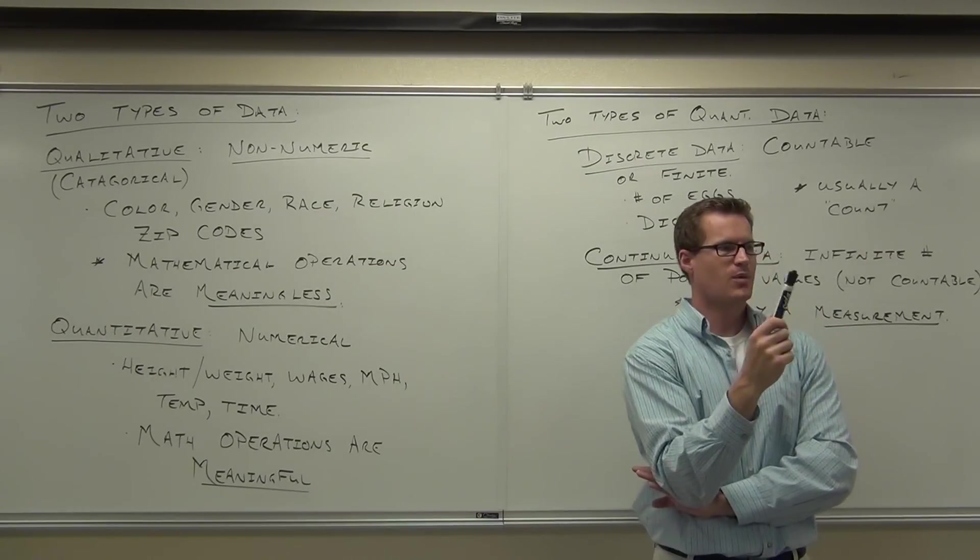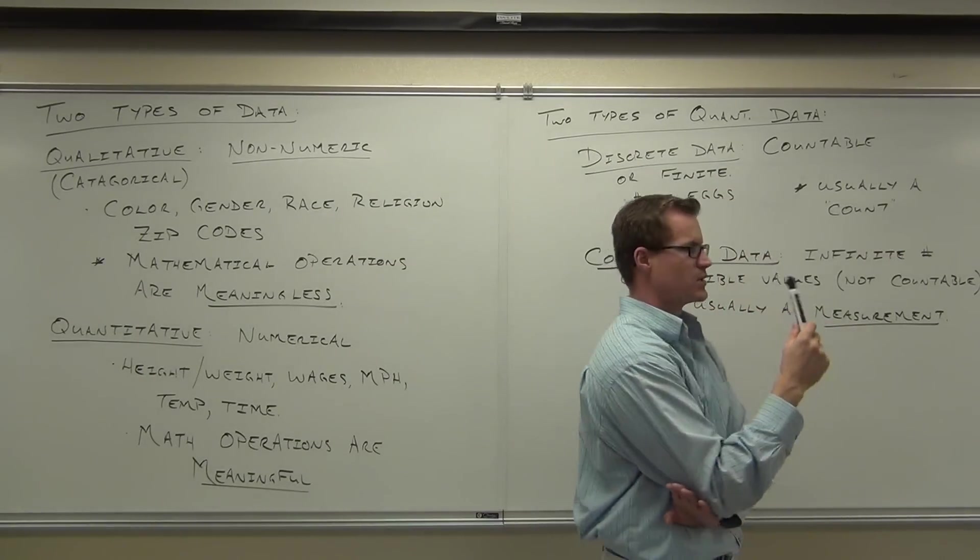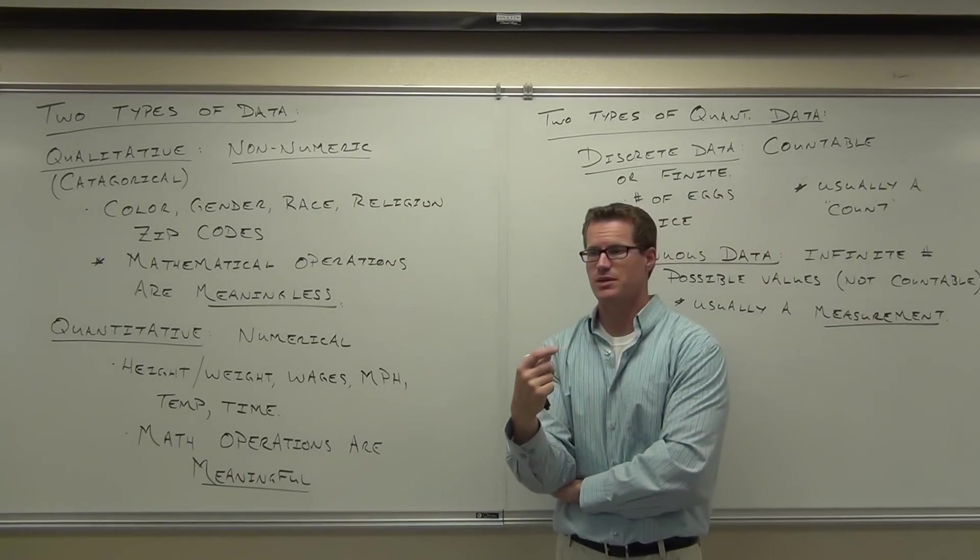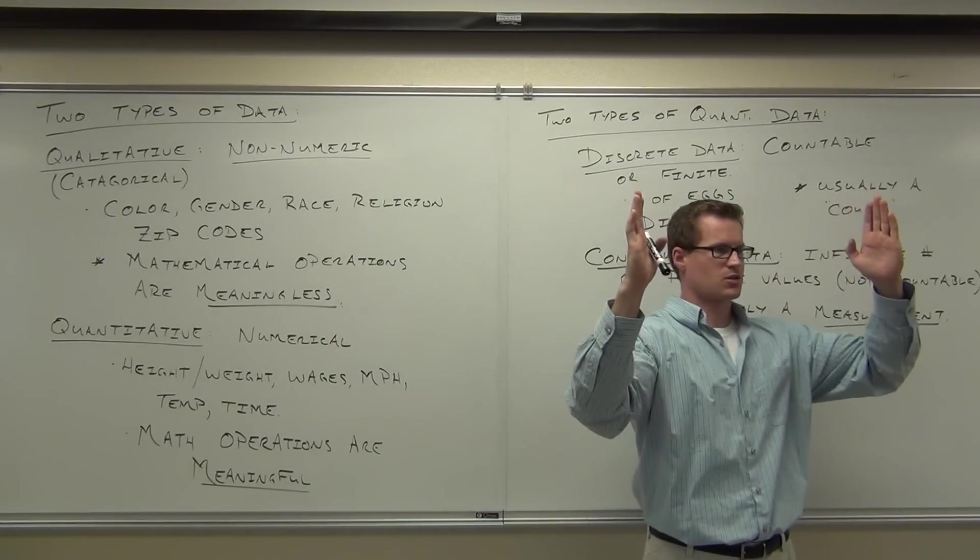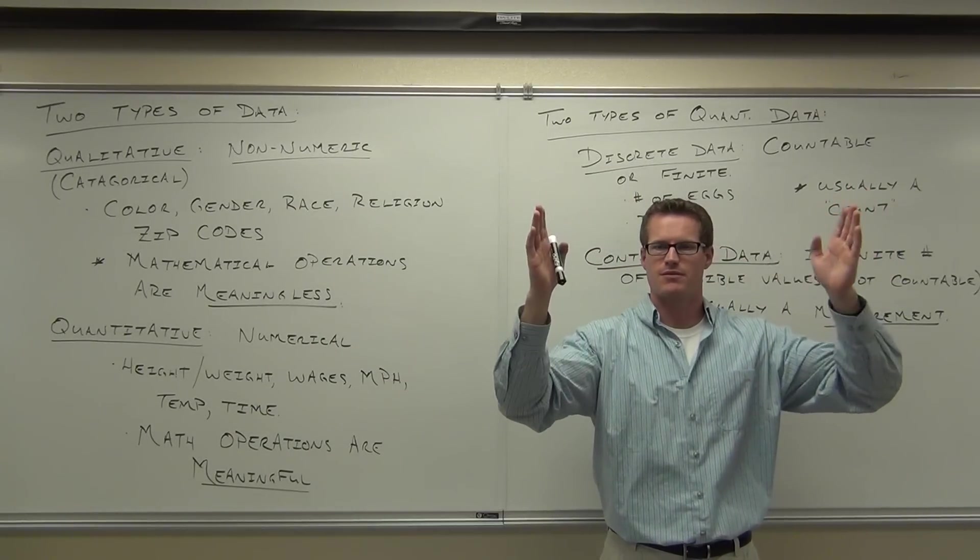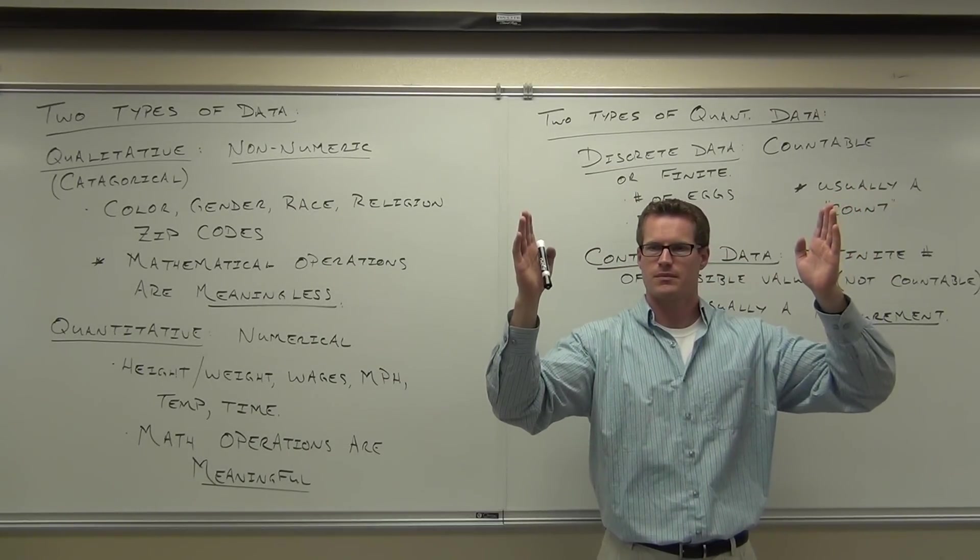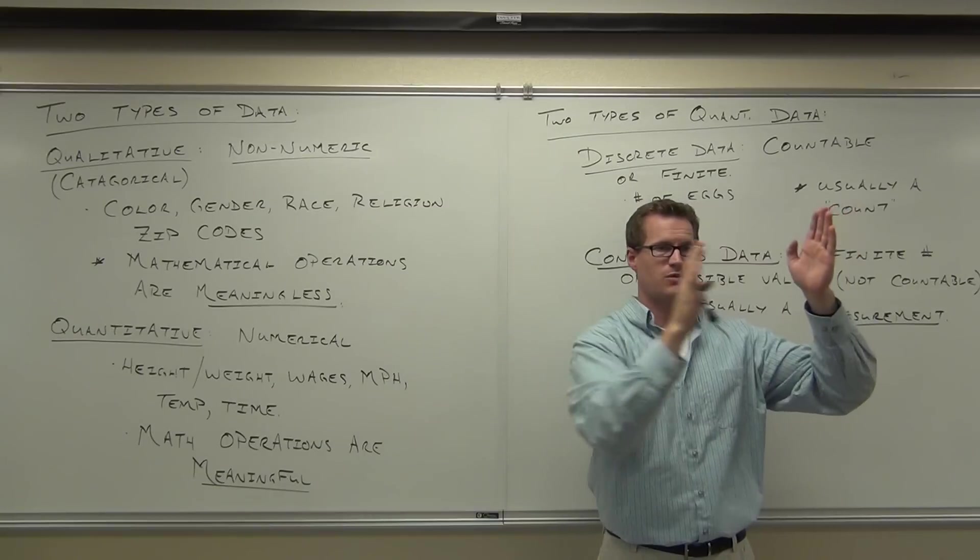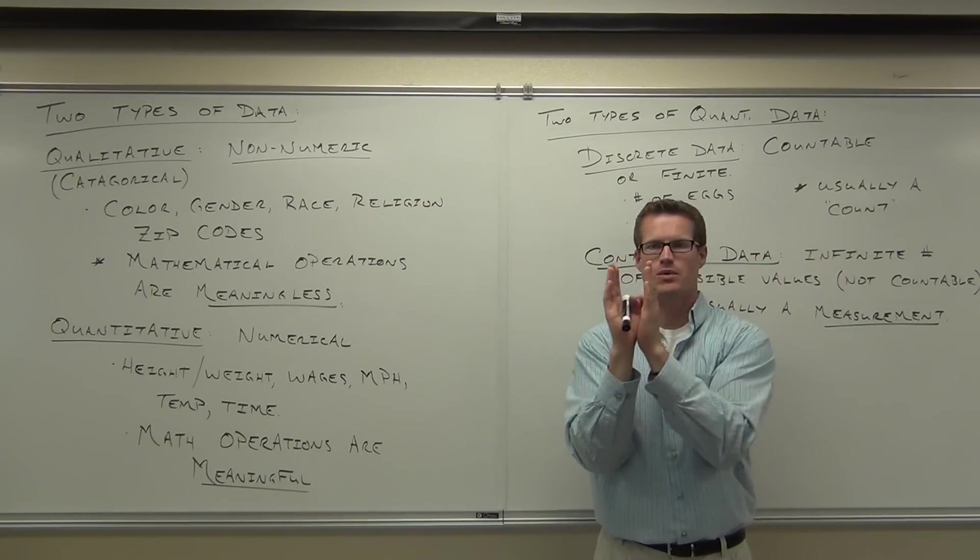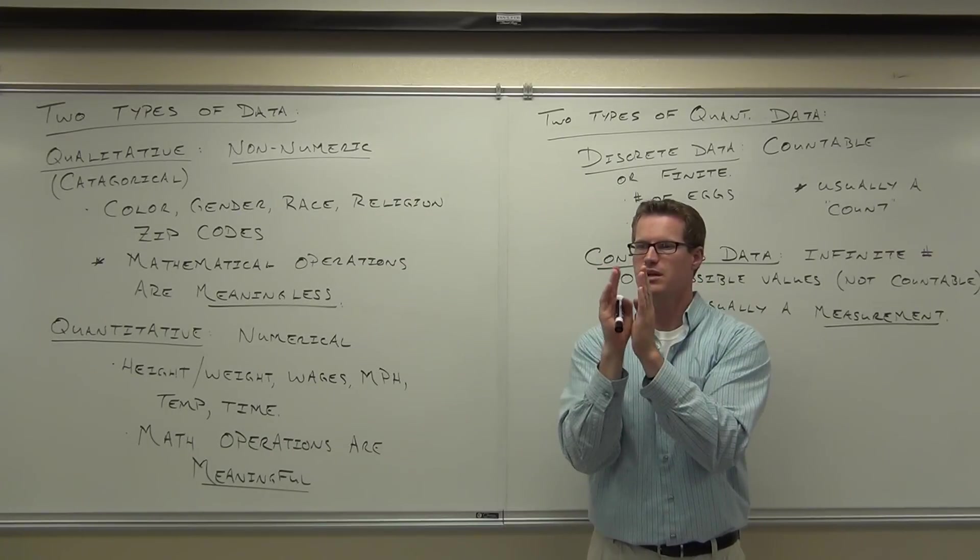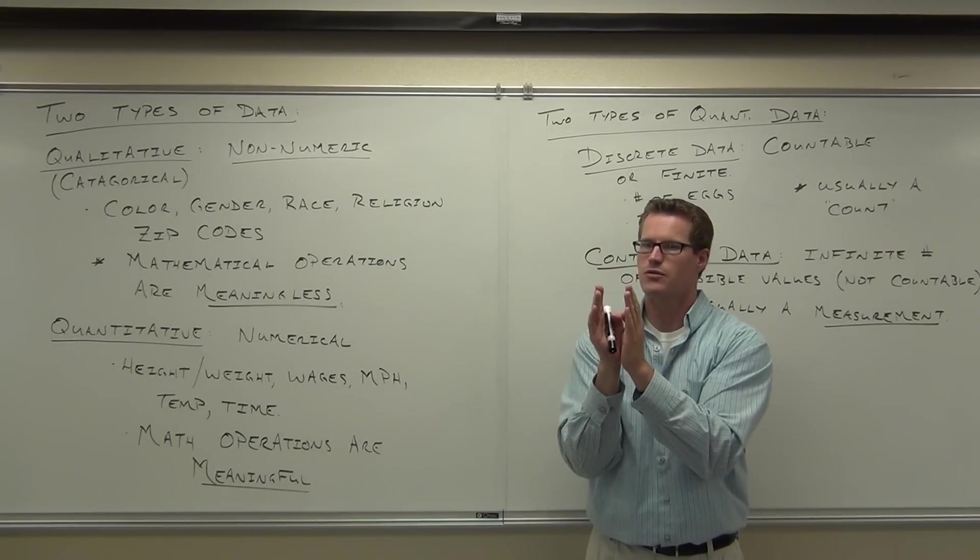But here's the thing about measurements or continuous data. There's an infinite number of possibilities that it could be. For instance, between ninety-five and ninety-six degrees, do you have to be either ninety-five or ninety-six degrees? Do you have to be right in the middle of those two things? So here's the point about continuous. Between any range of numbers, continuous has an unlimited number of numbers between there you could pick.